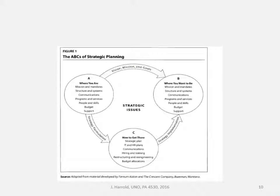This chart is hard to read — it's a PDF picture I took — but it's in your book at page 11. This talks about what Bryson calls the ABCs of strategic planning, and I want you to concentrate on two things. Really in a nutshell, strategic planning first tells you where you are as an organization — we're going to be talking about mission and mandates, structure and systems, communications, programs and services. Then strategic planning helps you figure out where you want to be — what kind of organization do you want to be? And then finally, how do you get there? And that is your strategic plan.